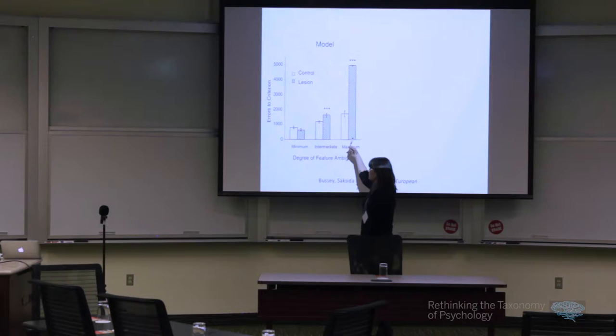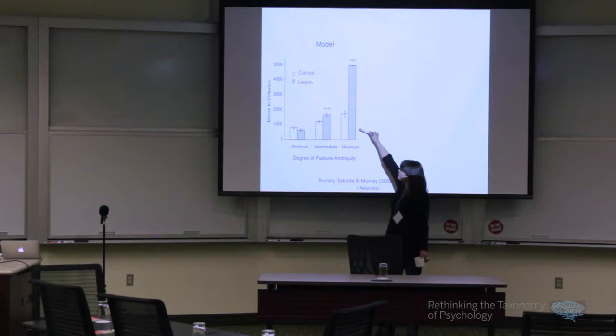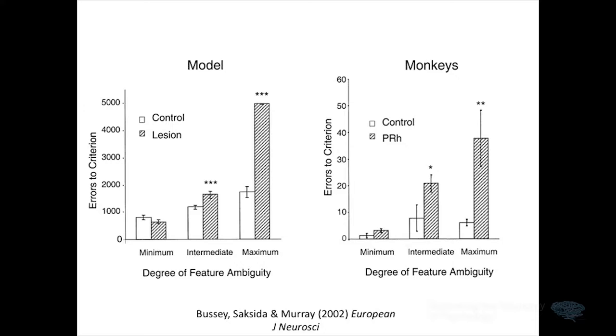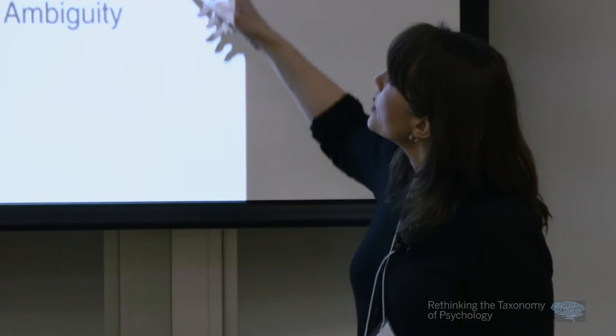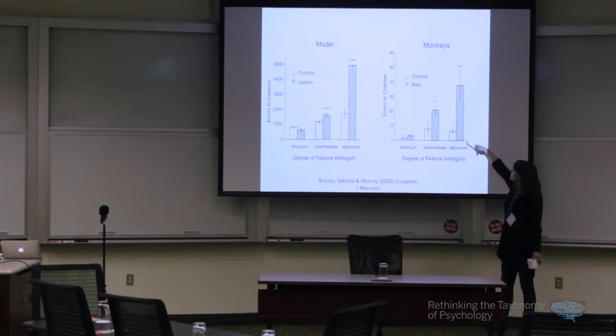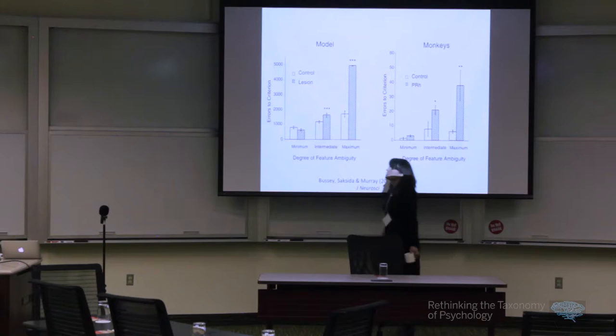These were the data from the model. Of course the model was built to simulate these data — anyone who knows anything about modeling will know this is no great surprise. You take out the perirhinal layer and you see a huge impairment — we're looking at errors to criterion. The models obviously couldn't do the maximum ambiguity condition because they didn't have the representations required to solve the problem, and in the minimum ambiguity condition they were perfectly fine. What was interesting was that our data from the monkeys looked exactly like that. Animals with damage in perirhinal cortex given a visual discrimination problem with the highly ambiguous condition were highly impaired. In the minimum ambiguity condition they were perfectly fine.